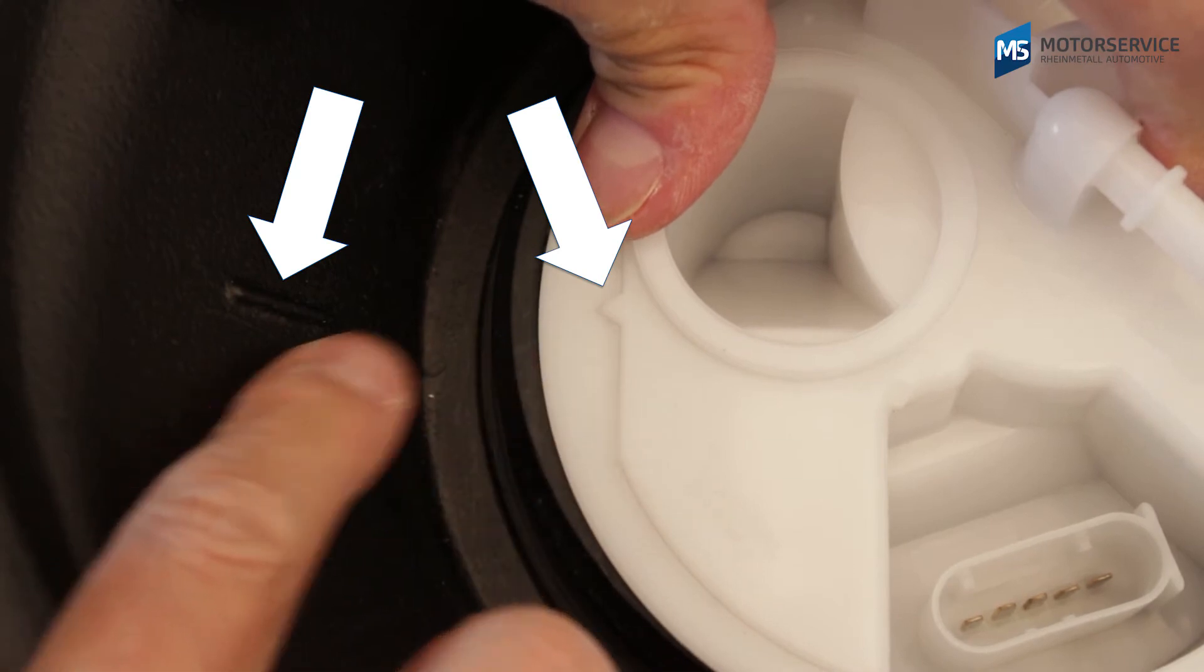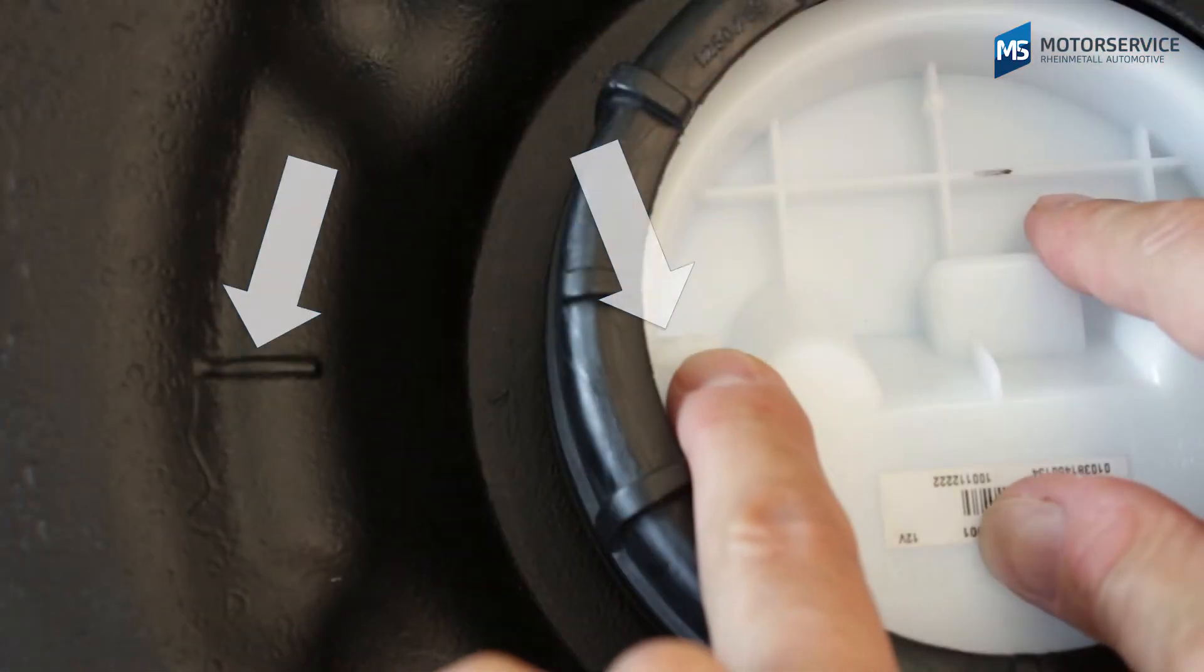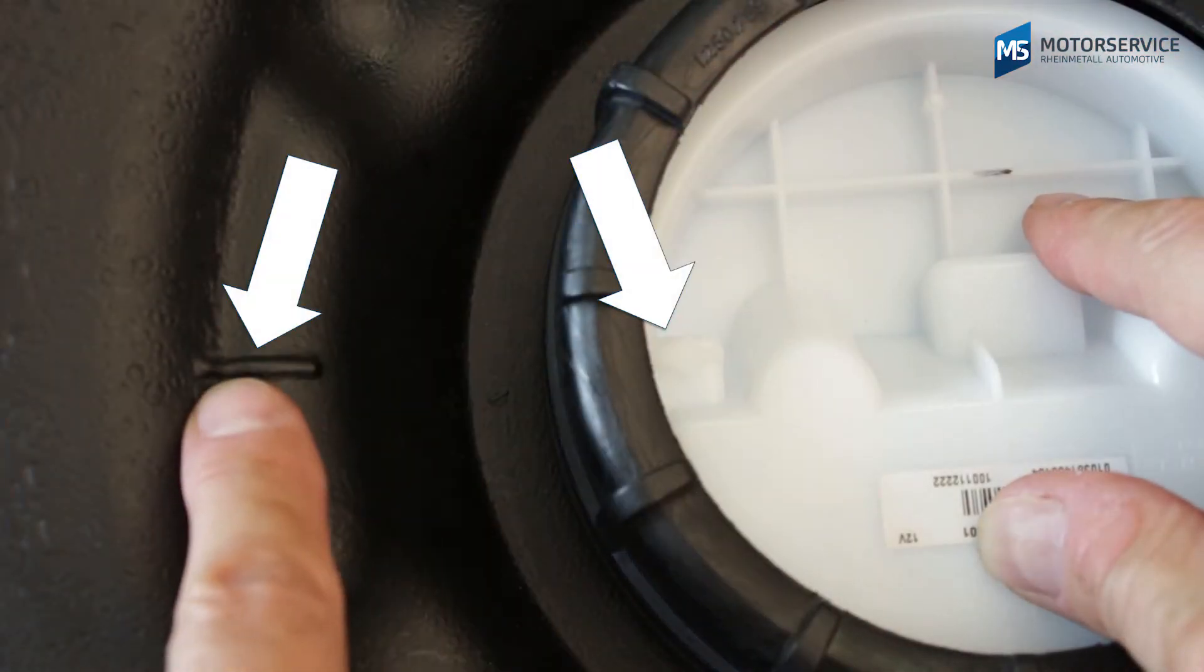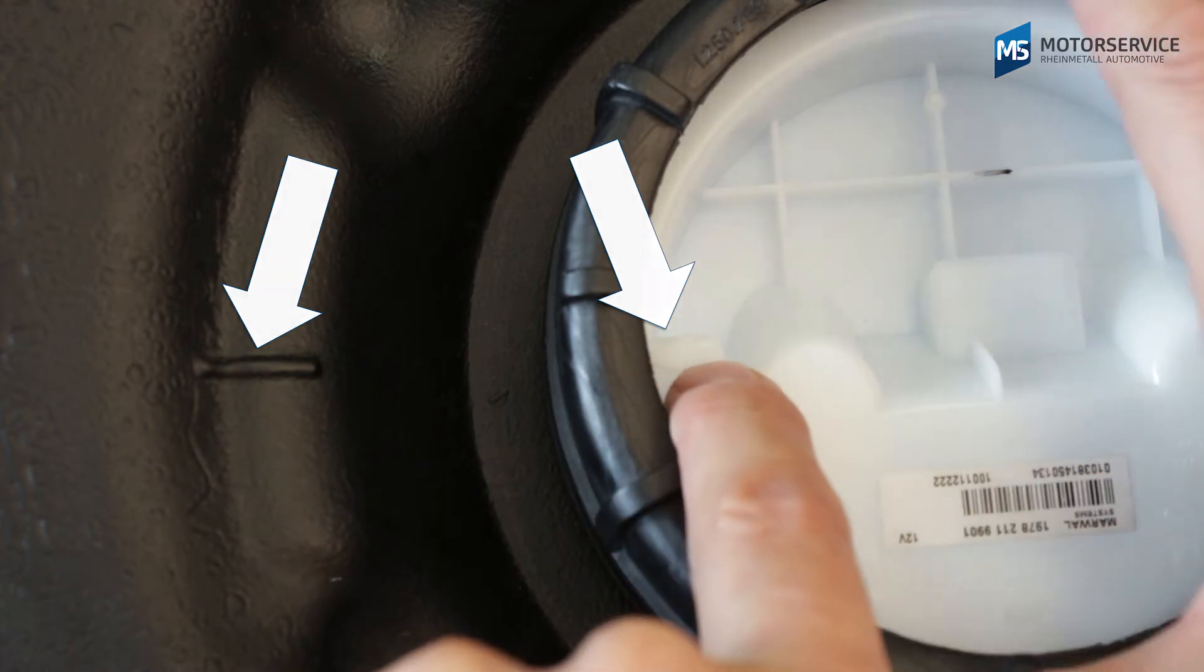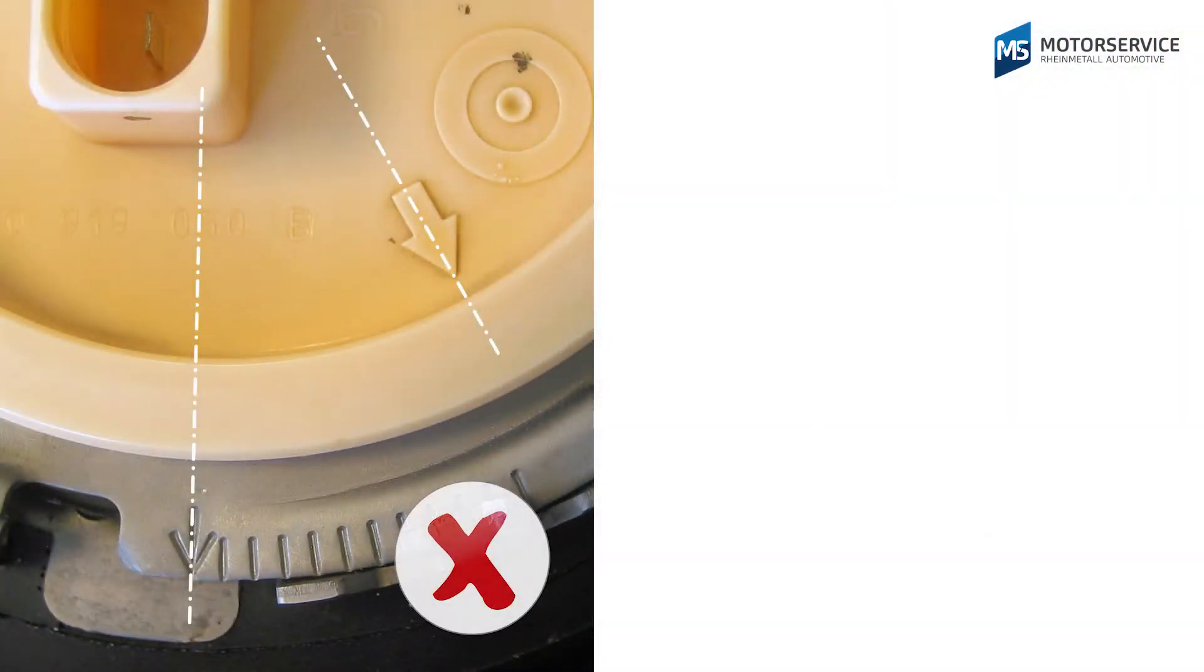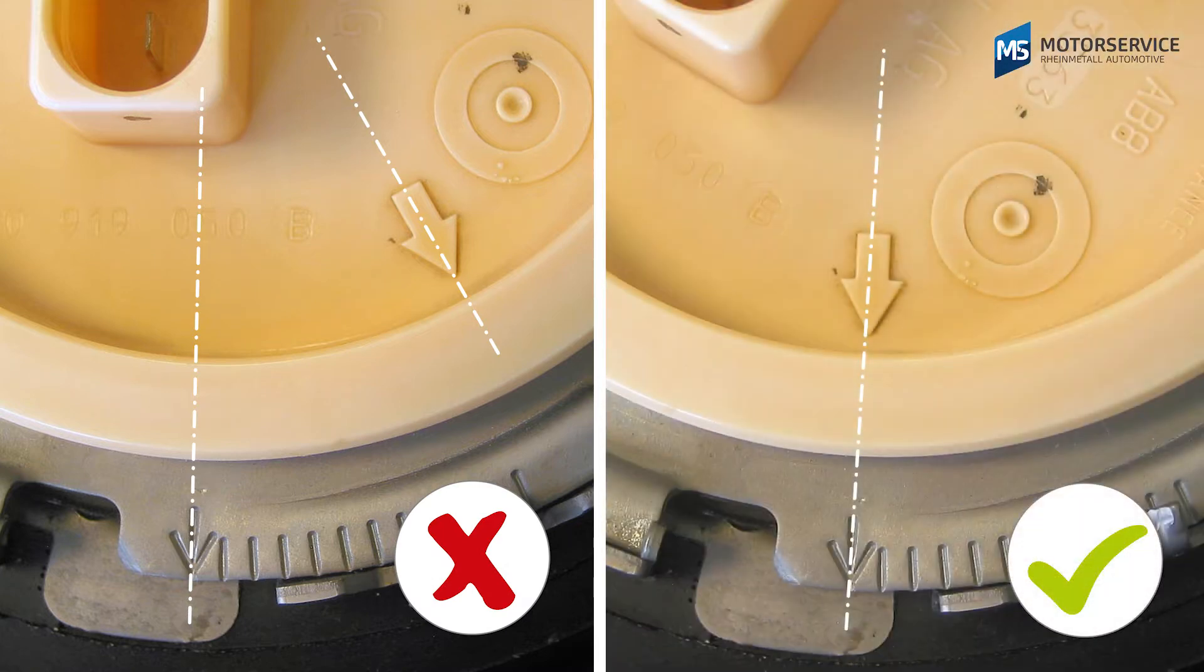To ensure that this does not happen, markings are often present on the tank and on the flange cover. Fuel delivery modules must therefore always be replaced so that the markings are located directly opposite each other.